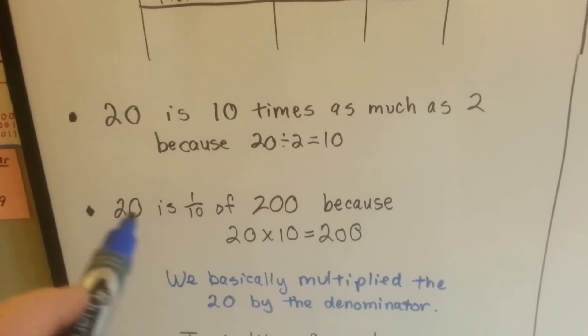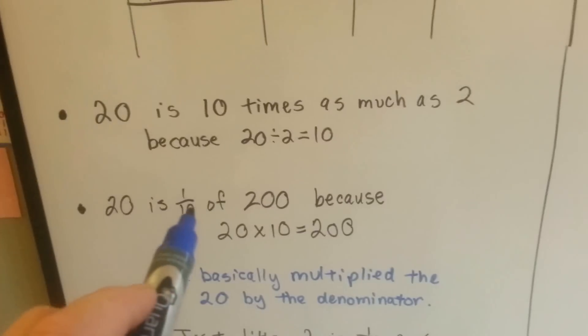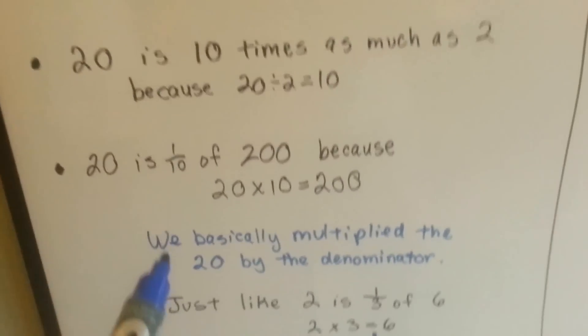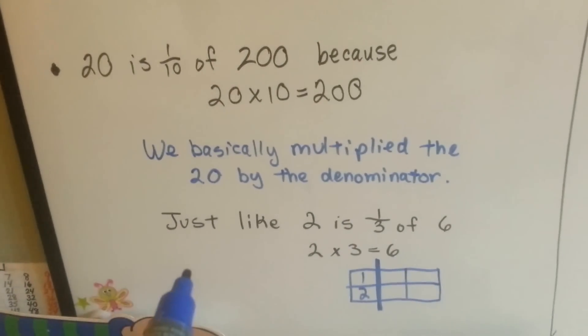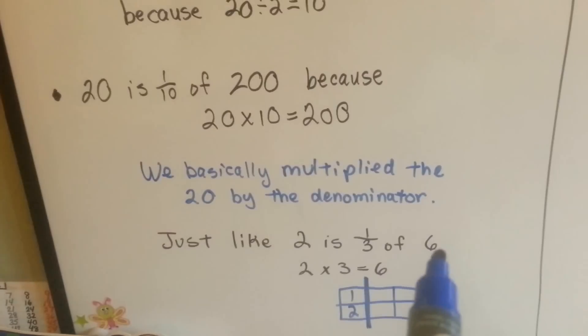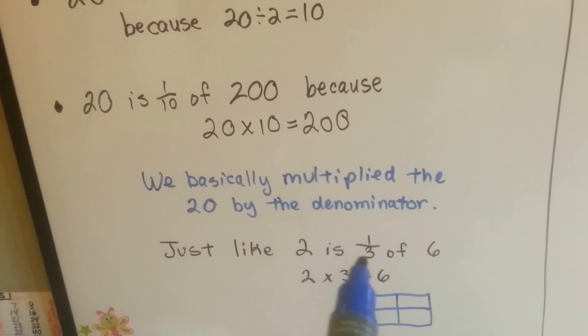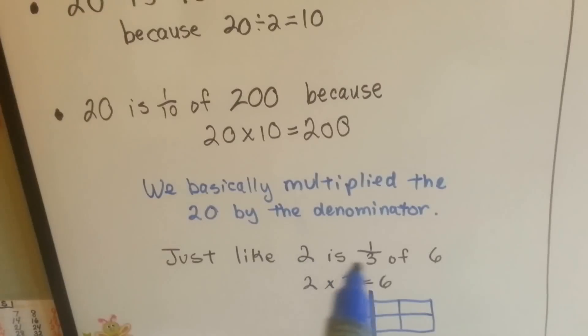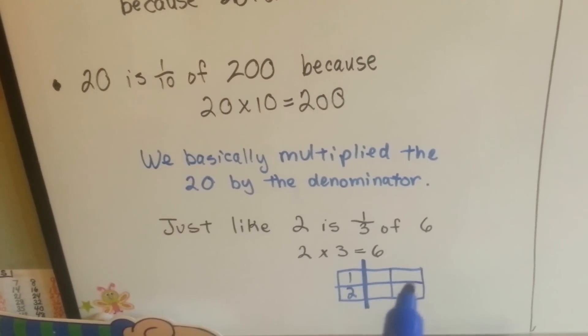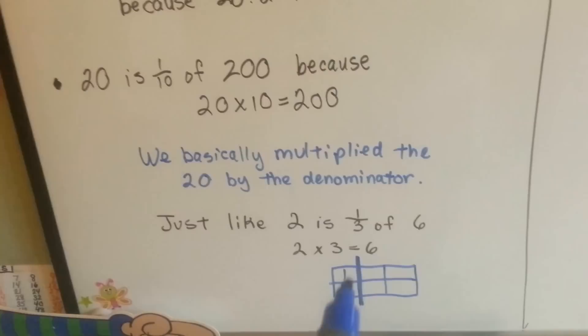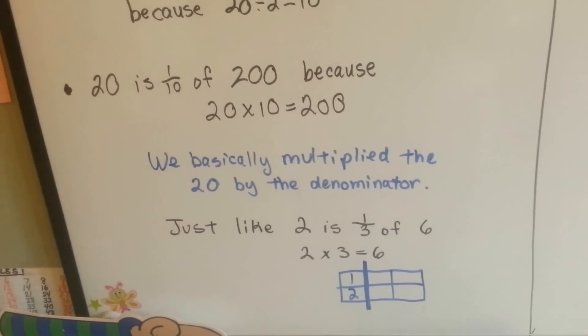We're pretty much just multiplying the number by the denominator. See? Do you remember our fractions? 2 is 1 third of 6. We multiply the 2 times the denominator. 2 times 3 is 6. Here's 6 squares. 2 of them would be 1 third of the 6.